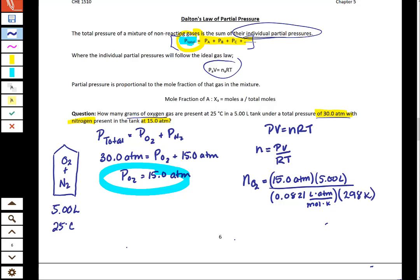When we go through this you're going to end up with 3.07 moles of O2 and now your final step is to convert that to grams.